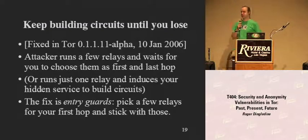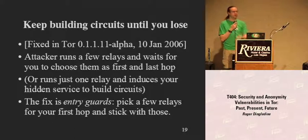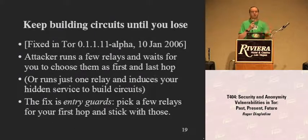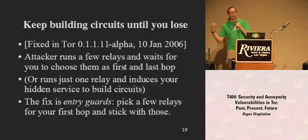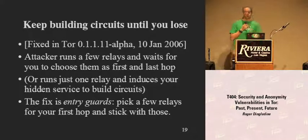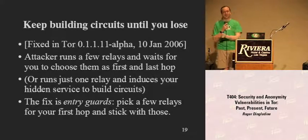Another attack that researchers Paul Syverson and Lasse Øverlier found: how do you figure out the location of a Tor hidden service? If you run a couple of fast servers and keep making the hidden service build more circuits, eventually it's going to pick your node as the first hop. Then you win — you look at it and say, you're not a Tor server, you're the hidden service I've been inducing to make connections. If you run two or three fast Tor servers and wait patiently, eventually the user picks your node for both first and last hop, and she loses.